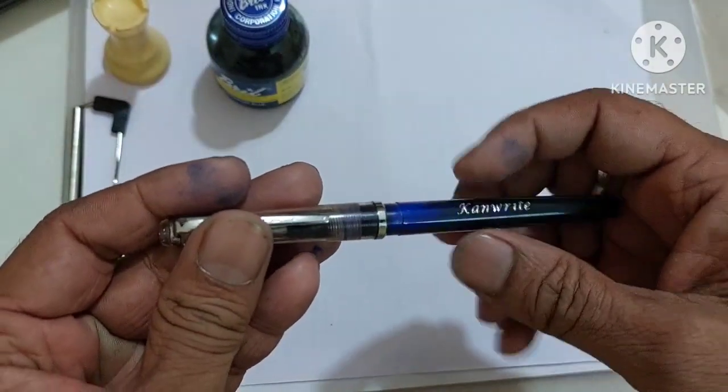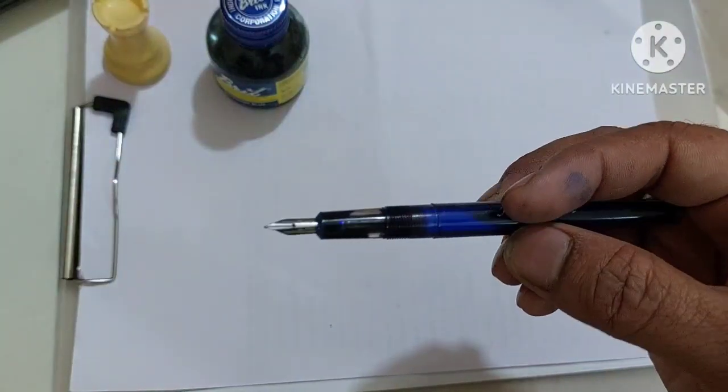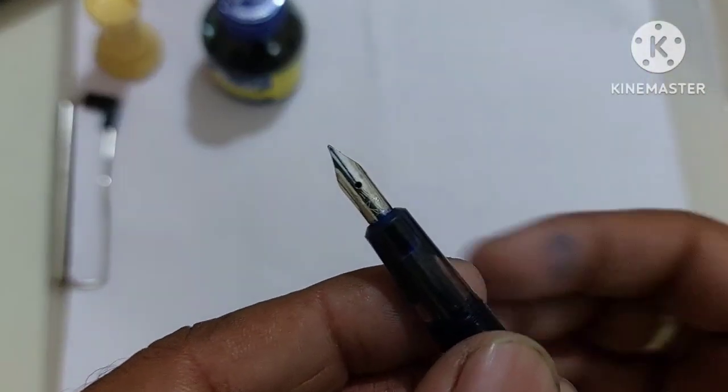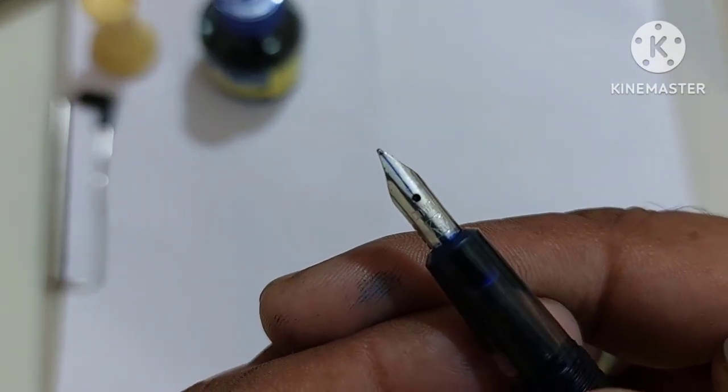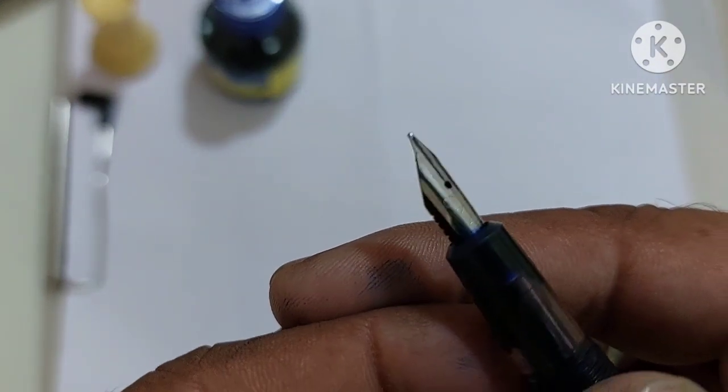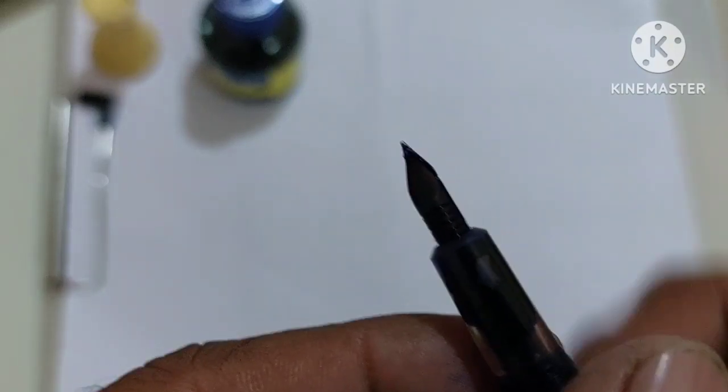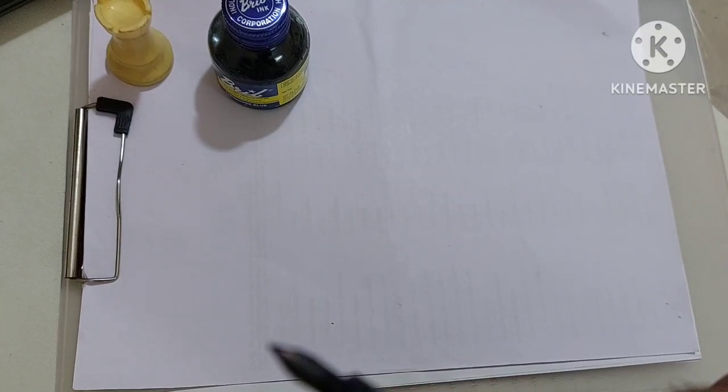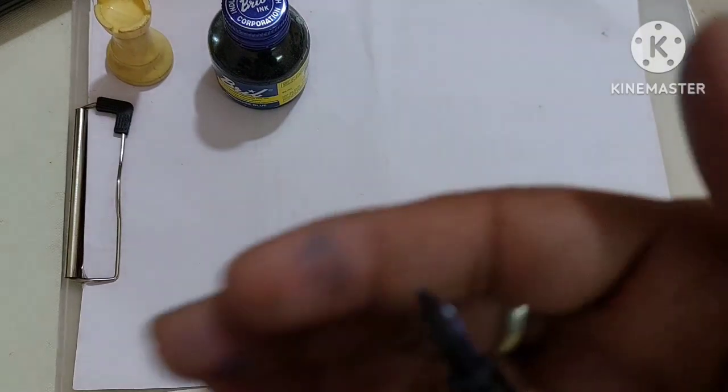Let us open and see how this pen looks like. Here you can see it has a small zero nib. It has a small zero nib and the feed is I think plastic. It is plastic feed I think so.